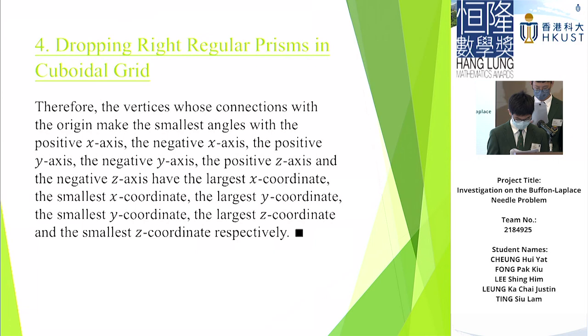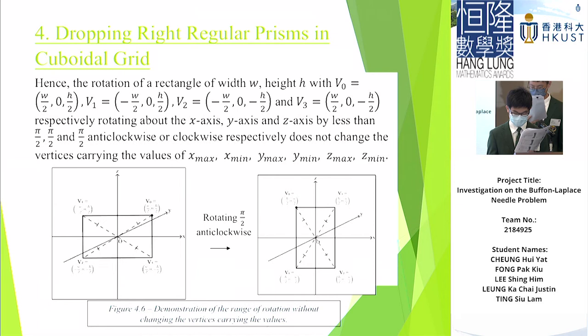And hence, the rotation of a rectangle of width w, height h, and with these vertices, rotating about the x, y, z axes by less than π/2, π/2, and π/2 anticlockwise or clockwise, respectively, does not change the vertices carrying the x, y, z extreme values.